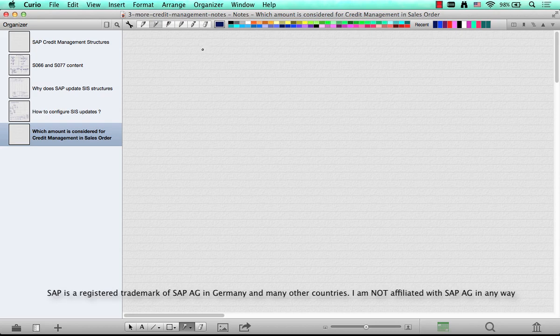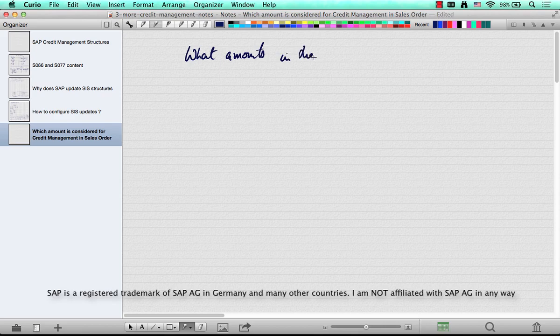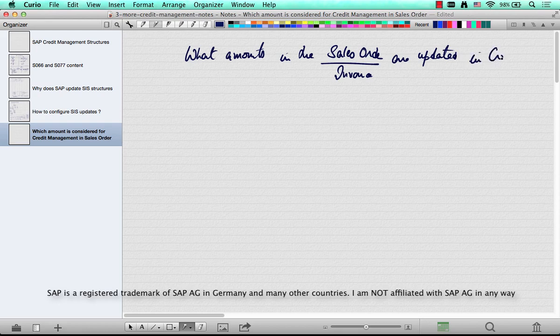The question is what amounts in the sales order or invoice are updated in credit management. This question can be asked in a variety of ways, but let me explain what the intent is.